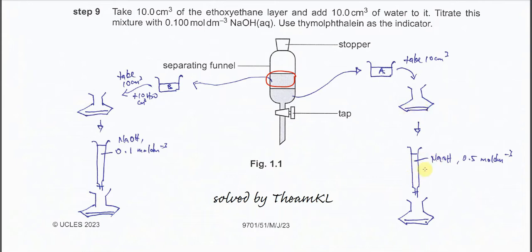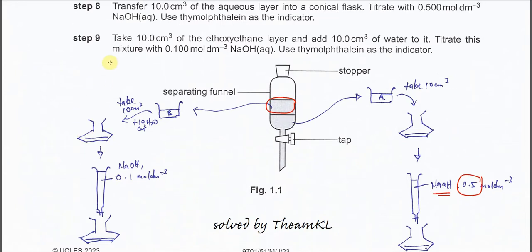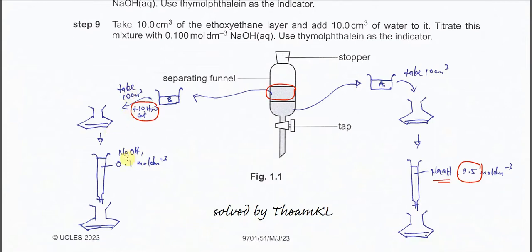The concentration of sodium hydroxide is 0.5 mol/dm³, giving a certain volume from which we get the moles of sodium hydroxide. In step 9, take 10 cm³ from the ethoxyethane layer. We need to add 10 cm³ of water to the organic layer before titrating with sodium hydroxide at 0.1 mol/dm³, using the same indicator.